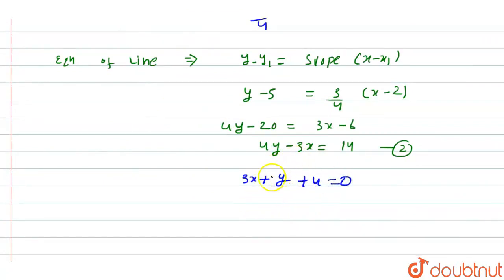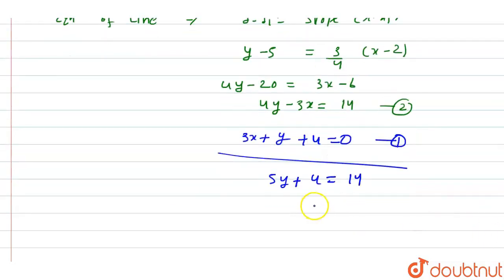If we add these two equations, we get 5y + 4 = 14, so 5y = 10, and y = 2.